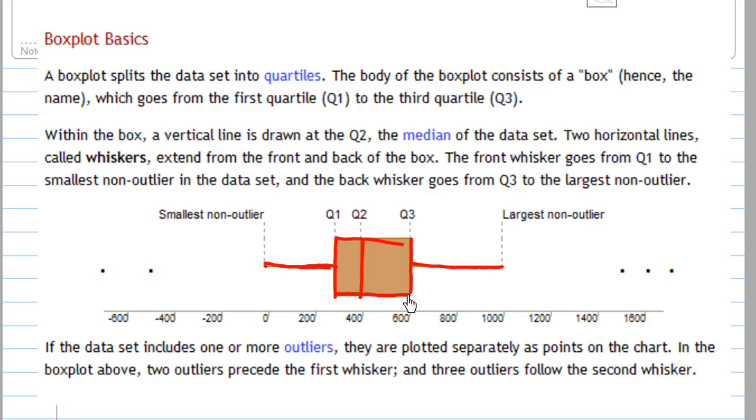If the data set includes one or more outliers, they are plotted separately as points on the chart. In the box plot above, two outliers precede the first whisker here, and three outliers follow the second whisker here.